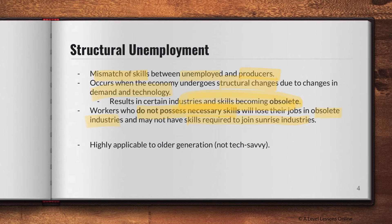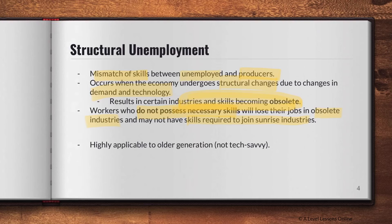Sunset industries — such as manufacturing and primary sector industries — are those becoming obsolete today. Workers employed in these industries may not possess the skills required by the more high-tech sunrise industries. This skills mismatch is why structural unemployment occurs. It is particularly applicable to the older generation who did not grow up with technology and are not tech-savvy, making structural unemployment a very common cause of unemployment amongst this group.